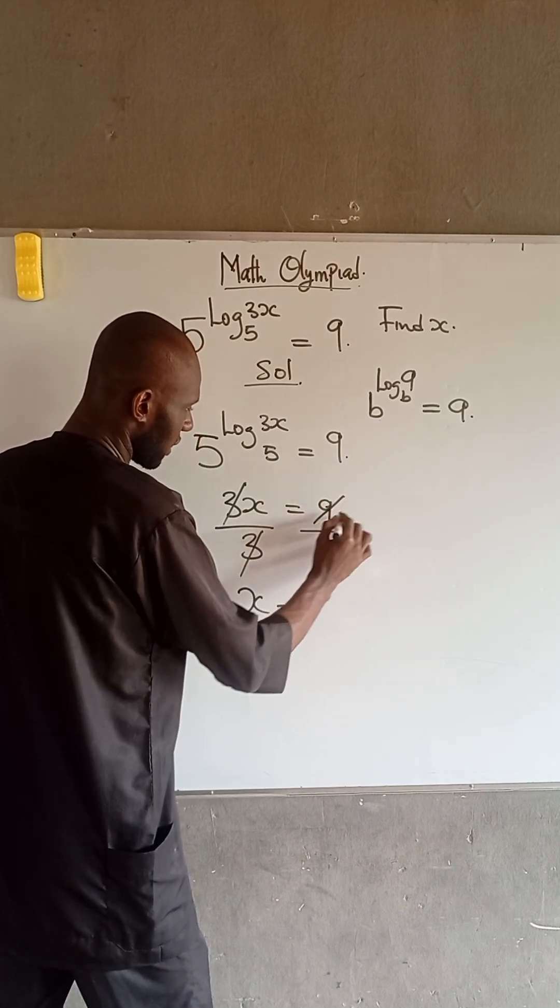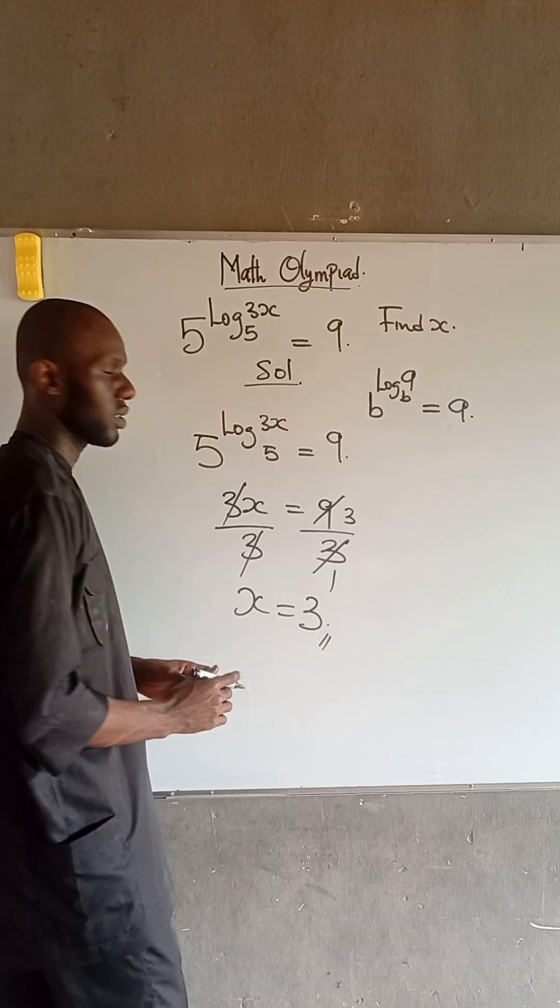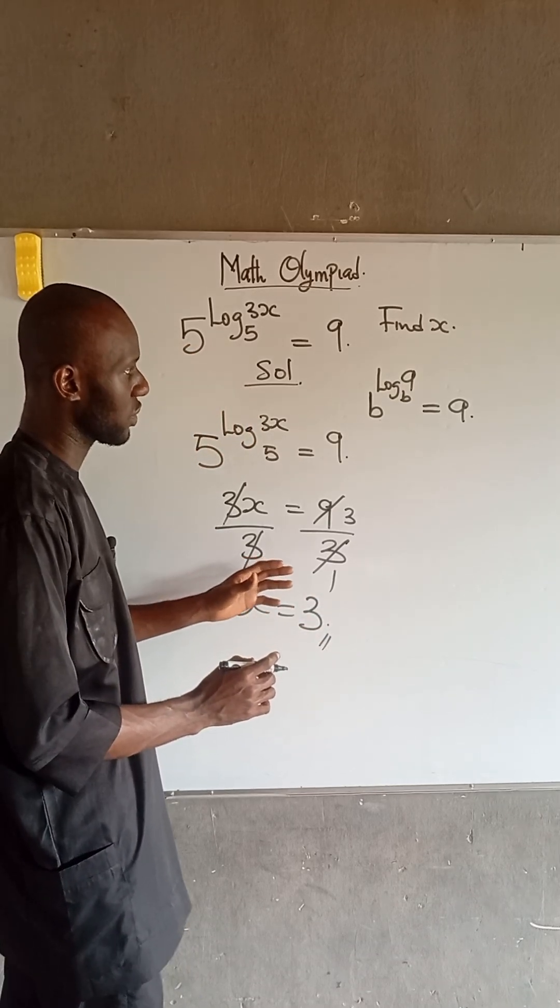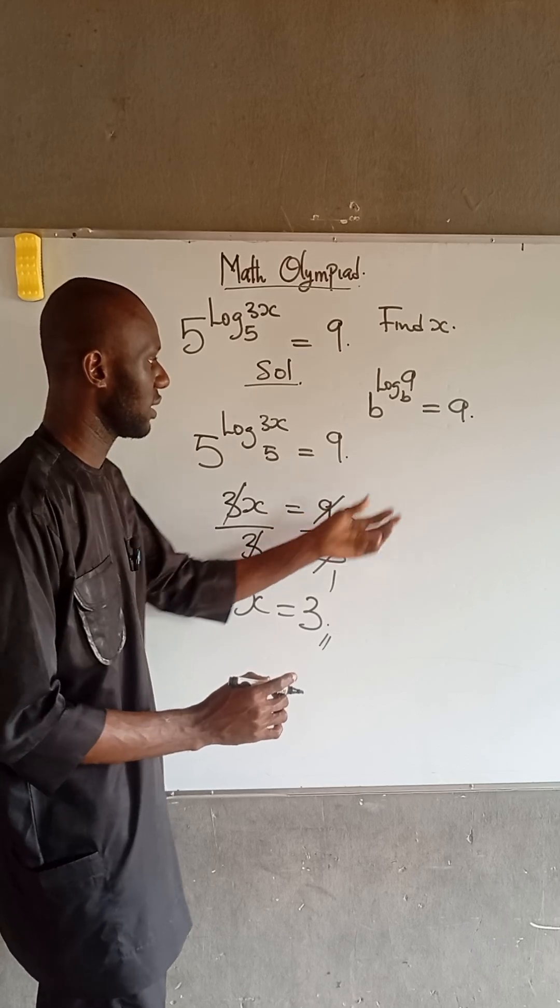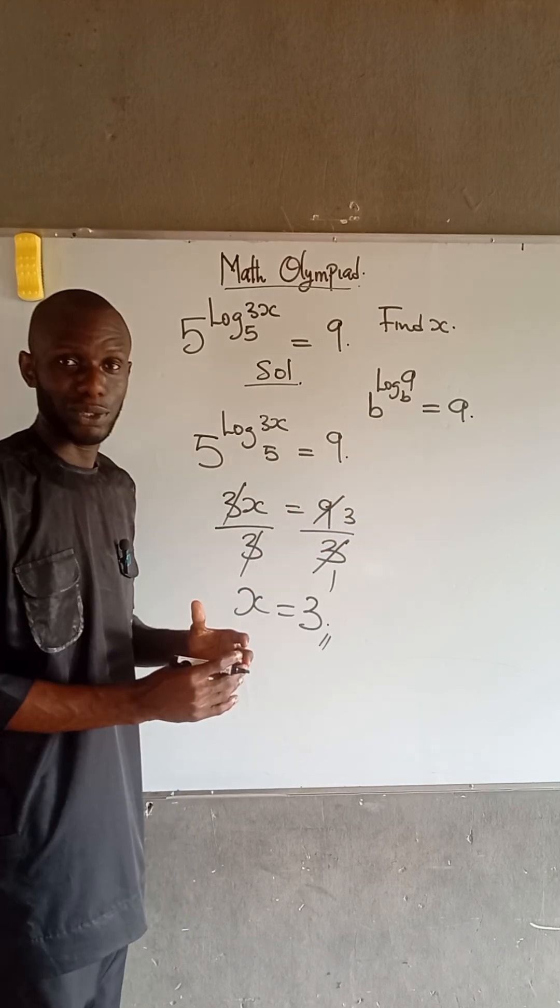We have 1 and 9 divided by 3 we have 3. So therefore x is equal to 3. So to solve this kind of question, all you need to know is to apply the right rule and the question becomes very simple.